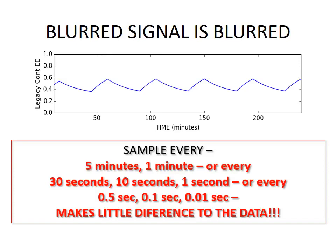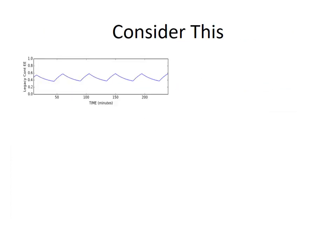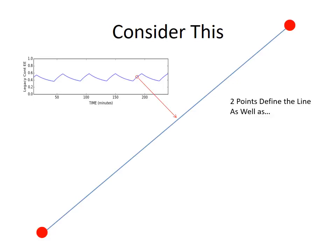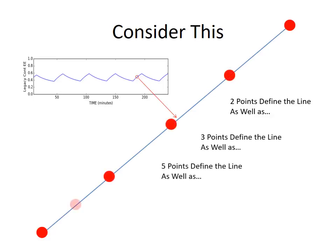You could sample every five minutes, every one minute, every 30 seconds, one second, or a hundredth of a second, and it wouldn't actually make any real difference to the waveform you're looking at. So this waveform could come from a continuous legacy system. Another way of looking at this: if we take about a 10-minute section of this legacy system output, it very closely approximates a straight line. And two points will define that line as well as three points, as well as five, nine, 600, or even 100,000 points — without really getting any new information. This is a really important point.